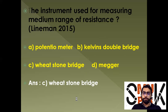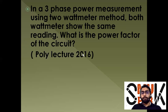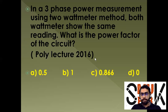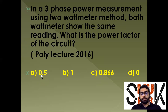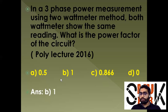Second question: using the three-phase power measurement with two wattmeter method, both wattmeters show the same reading — what is the power factor? Options: A) 0.5, B) 1, C) 0.86, D) 0. When both wattmeters show the same reading, the power factor is 1. If one wattmeter reads negative (W1 = -W2), then the power factor is 0. Since both readings are the same, option B is the correct answer.